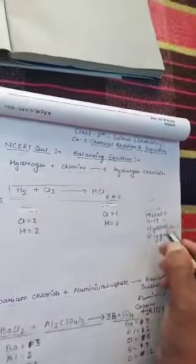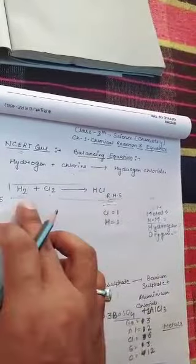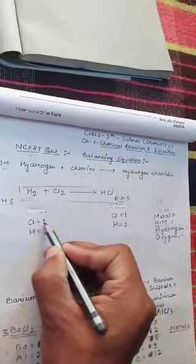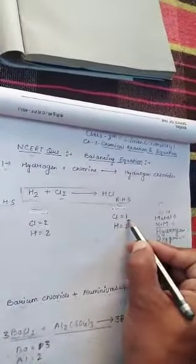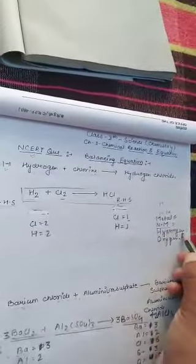After that, non-metal except hydrogen and oxygen. We have one non-metal except hydrogen and oxygen, which is chlorine. We will write the number of chlorine. Chlorine is 2 here and on this side chlorine is 1.